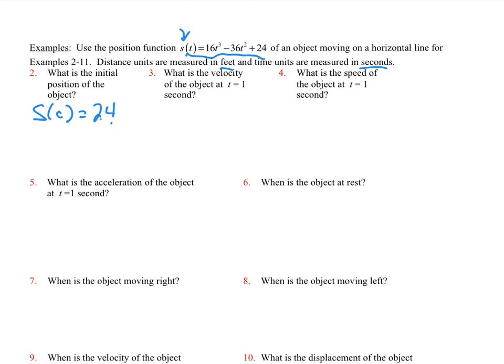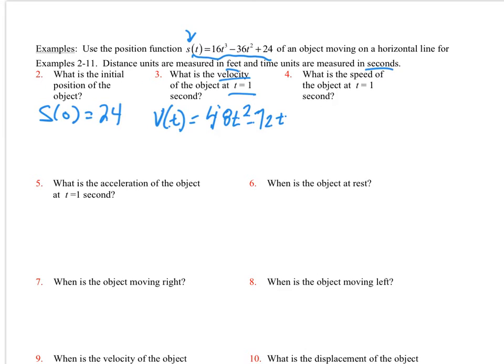Just plug it in right there. And then what is the velocity of the object at T equal to 1? Well, they asked us for velocity. So we have to go ahead and find velocity. So V of T is equal to 3 times 16. I'm going to be stretched on that.